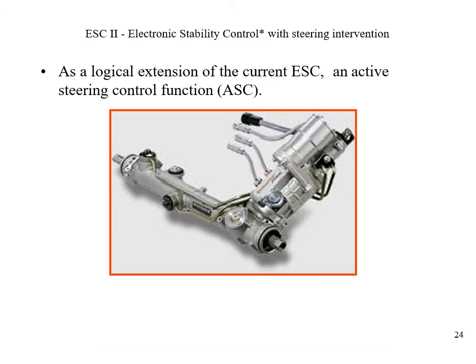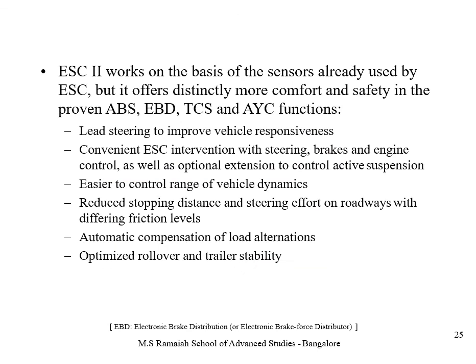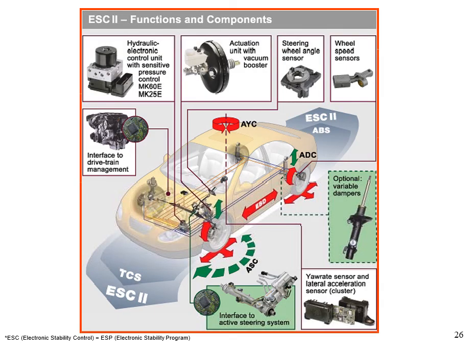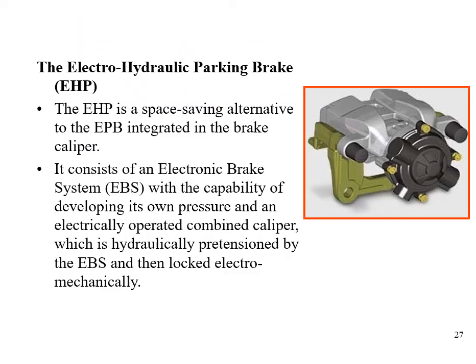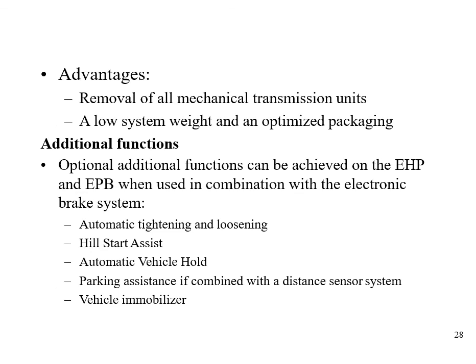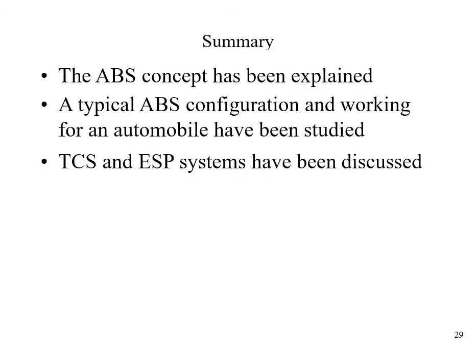Electronic stability control 2 (ESC2) works on the basis of sensors already used in the ESC but differs in its proven ABS, EBD, TCS, and AYC functions. ESC adds many sensors for better control. A hydraulic braking parking brake (EPB) is also available; it is a space-saving alternative integrating the brake caliper. The EPB consists of an electronic braking system capable of developing its own pressure and an electronically operated combined caliper that is hydraulically pretensioned by the EBS and then locked with an electronic magnet.